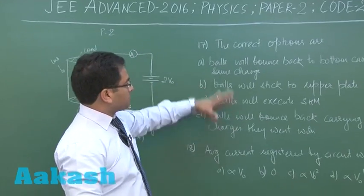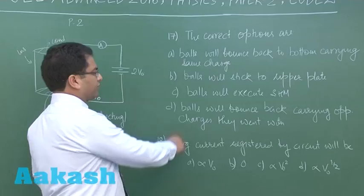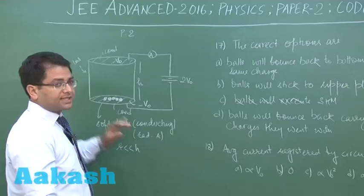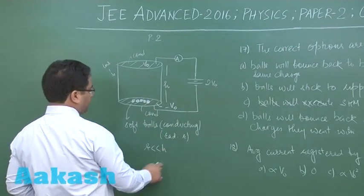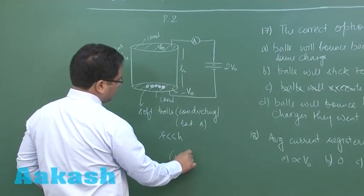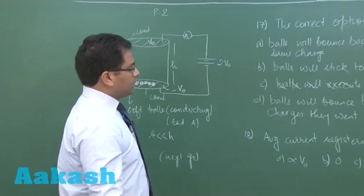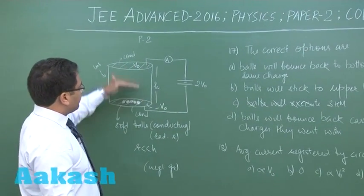The first thing is, the correct options out of this we need to see. Execute SHM will not be there because the acceleration here is constant, constant due to this particular potential difference, and we also need to neglect gravity, that's also given by the question.